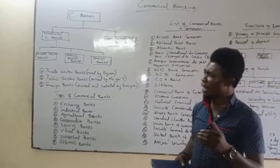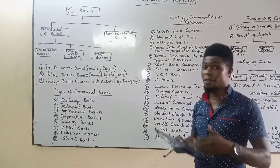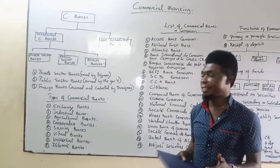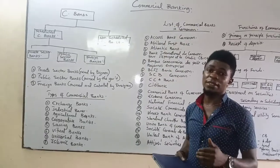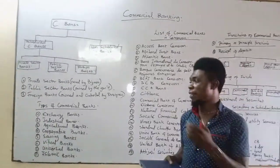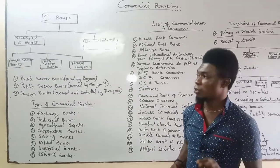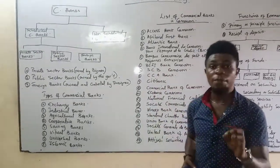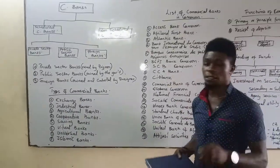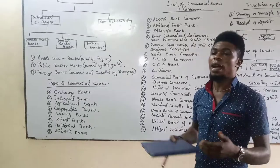The third category of scheduled commercial banks are foreign banks — banks that are owned by foreign investors. Within the framework of the country's economy, foreign banks are actually gaining ground. These are banks owned and controlled by foreign investors within the framework of that particular economy. So scheduled commercial banks are divided into three sectors: private sector banks owned by private individuals, public sector banks owned by governments, and foreign banks owned by foreign organizations aimed at maximizing profit.